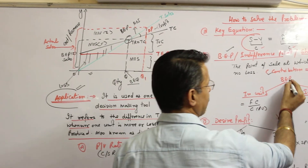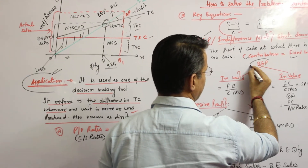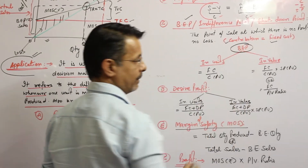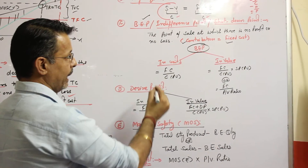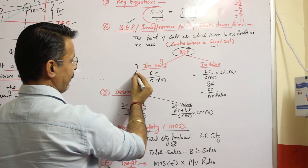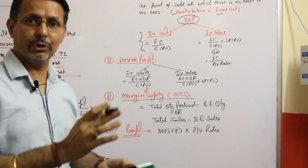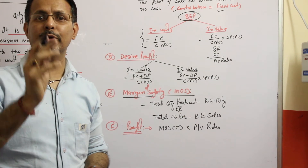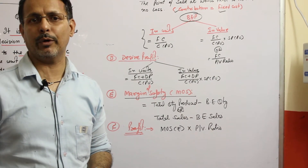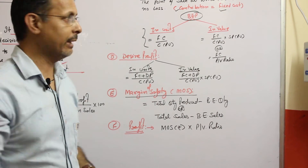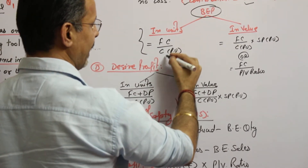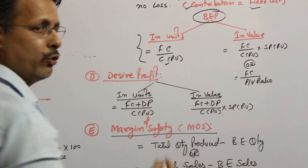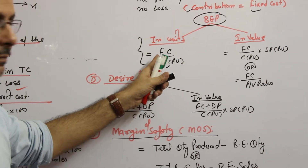When we calculate the break-even point, if we want to know the number of units at break-even point, the formula is: fixed cost divided by contribution per unit.